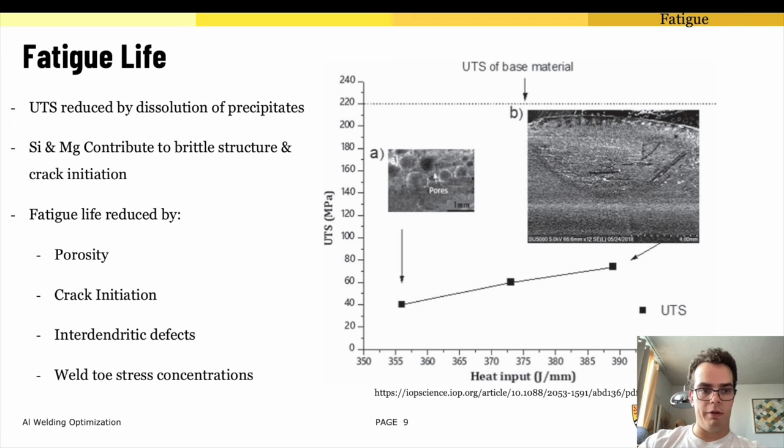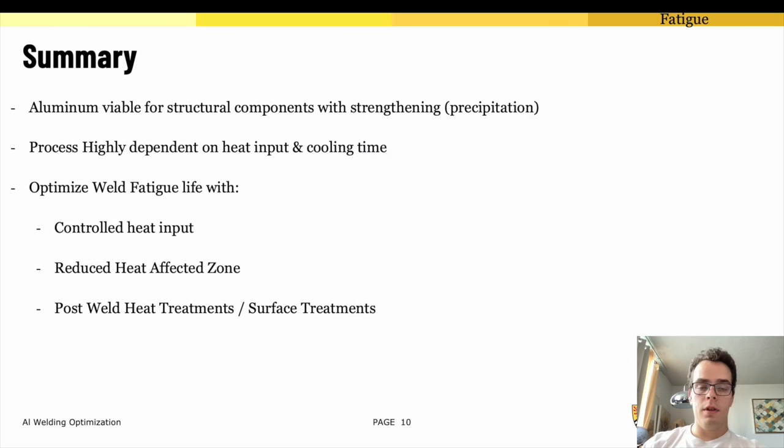All right, thank you so much for sticking with me. This material has been rated by peer-reviewed second years as slightly difficult, so if you have any questions feel free to contact me. We can see that aluminum is viable for structural components when you use its proper strengthening mechanisms. The main one here, in my favorite, is precipitation. We can see that our processes are highly dependent on heat input and cooling time, so we can look to optimize weld fatigue life with controlled heat input by reducing the heat affected zone and with post-weld heat treatments to try to bring some strength back into that aluminum. All right, thank you so much and have a great day.